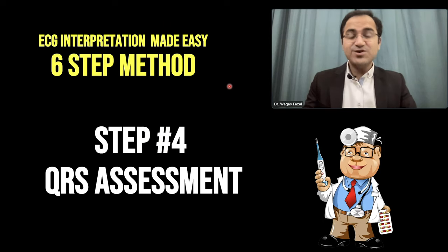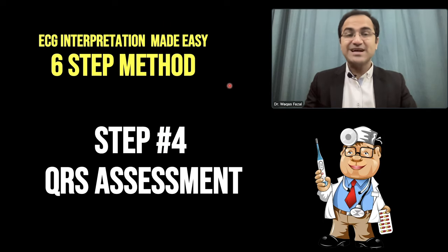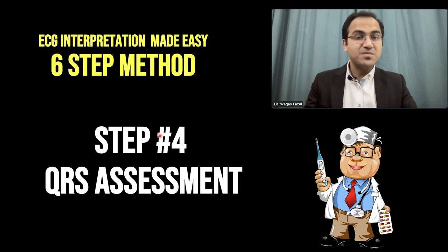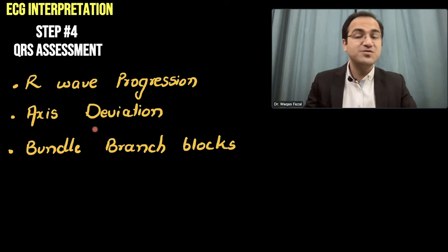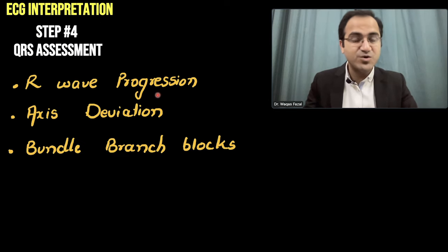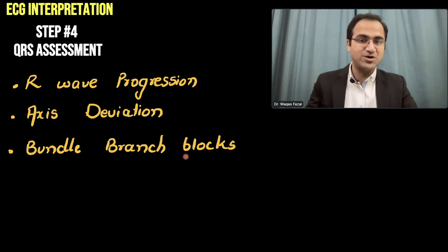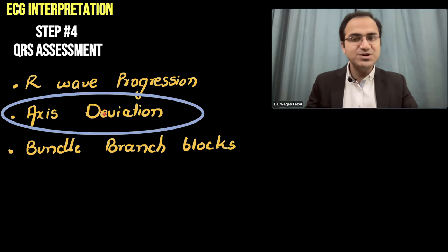In our video series of ECG interpretation made easy by the 6-step method, in this video we are going to talk about Step 4 of ECG interpretation: the QRS assessment. In QRS assessment we have three main steps: R wave progression assessment, axis deviation, and bundle branch block. In this video we are going to talk about axis deviation in QRS assessment.